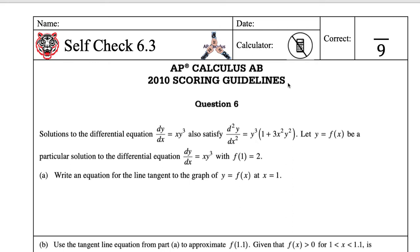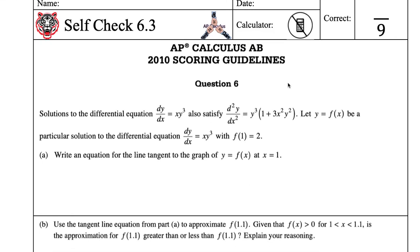This is AP Calculus AB self-check 6.3. You gave yourself 15 minutes to do question number 6 from 2010. You should be giving yourself 15 minutes every single time because that's exactly how much time you'll have on the AP test. Each question is 15 minutes, and there's a total of 6 questions, so that's 90 minutes — an hour and a half of doing free response questions.